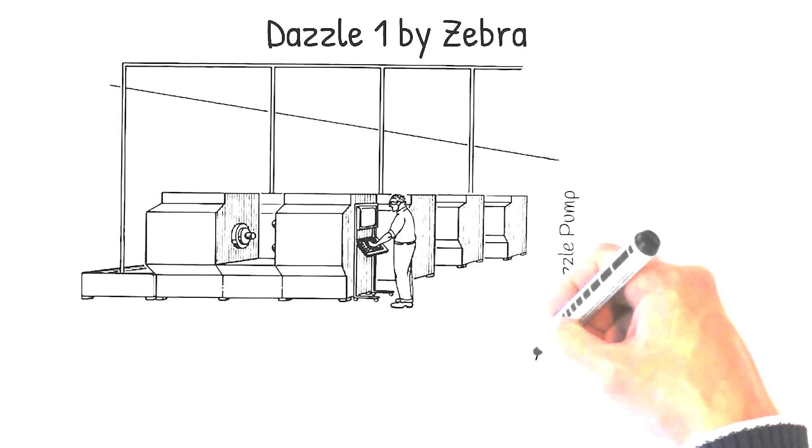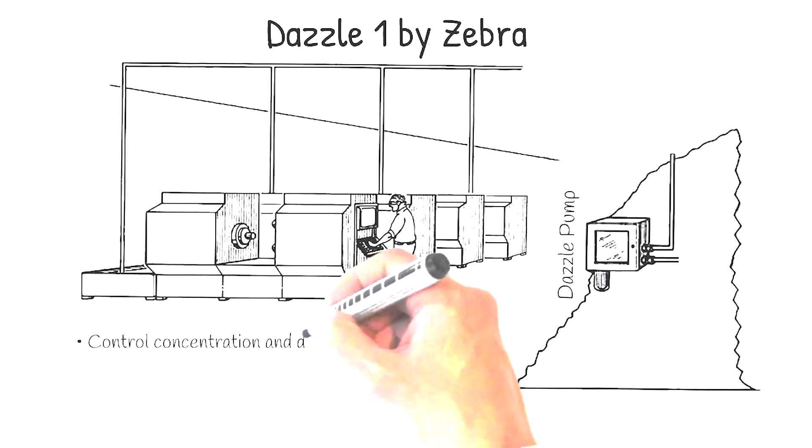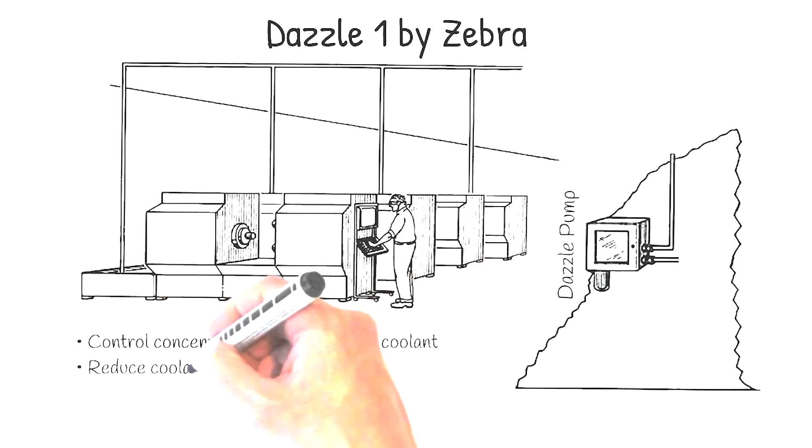Our system consists of the Dazzle Pump, which precisely controls coolant makeup concentration and its delivery, which can reduce coolant costs up to 30%.